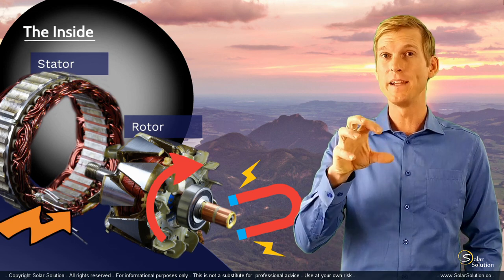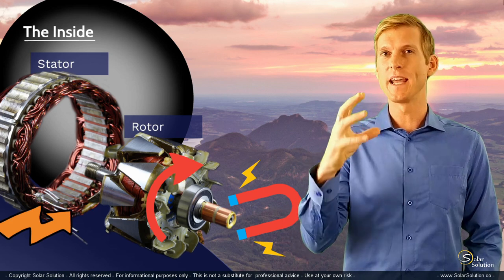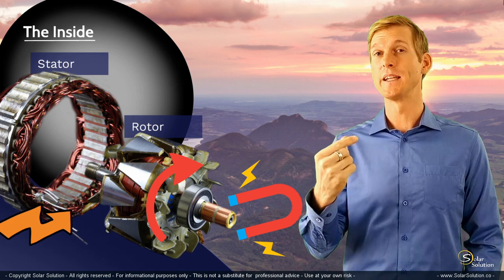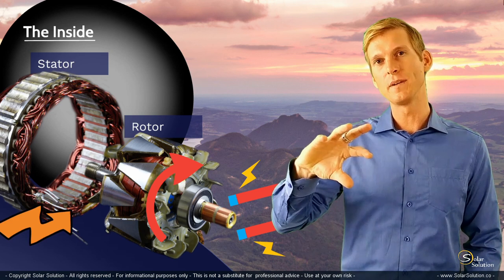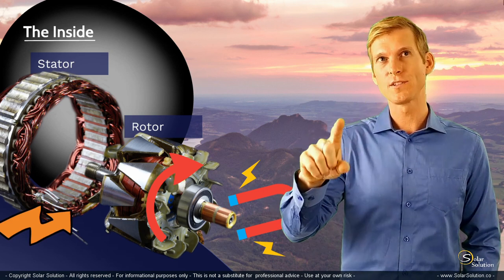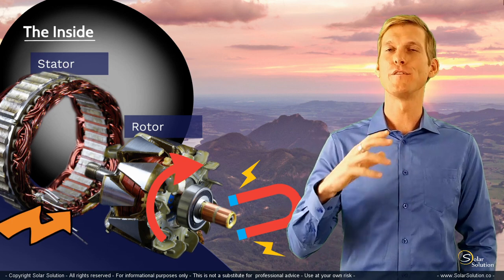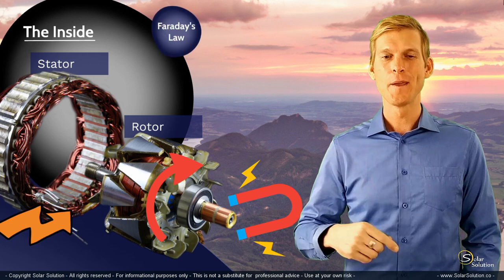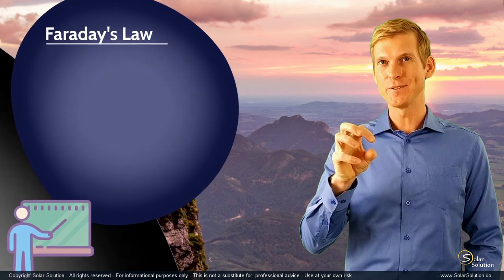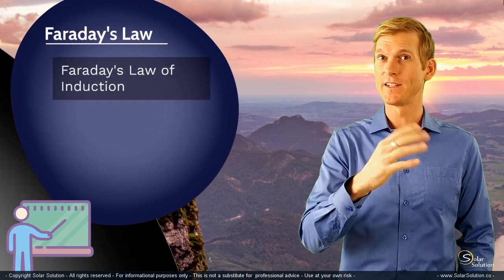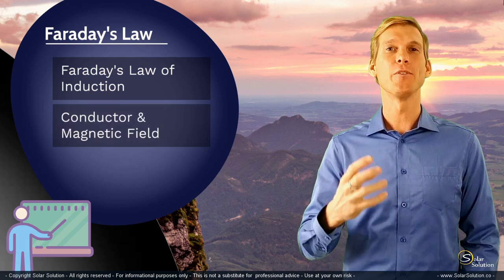So now you understand the very basic operating principle of an alternator: you're taking a magnetic field — in this situation the magnetic field is created by electricity — and you're moving that magnetic field across wires that conduct electricity. This principle is referred to as Faraday's law, because Mr. Faraday figured out a long time ago that if you take a magnetic field and move it across something that conducts electricity, referred to as a conductor, you're creating electricity.